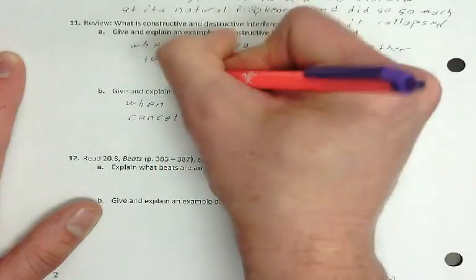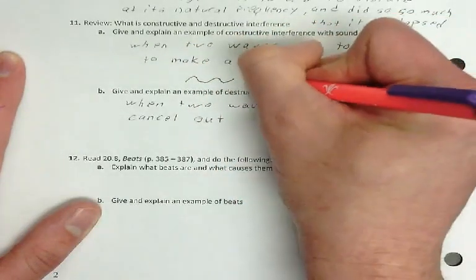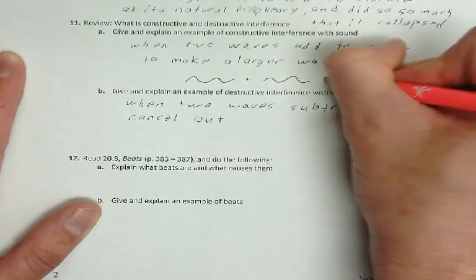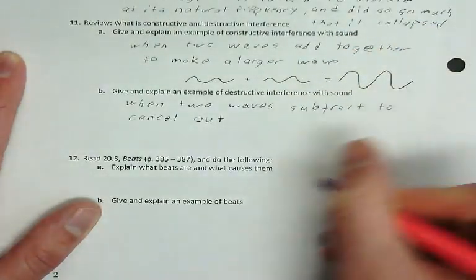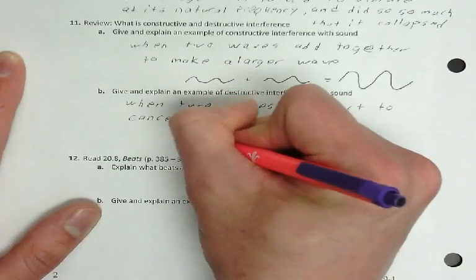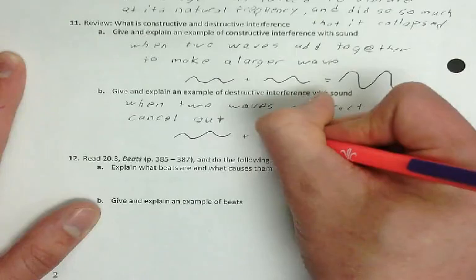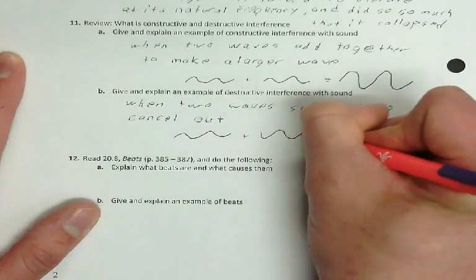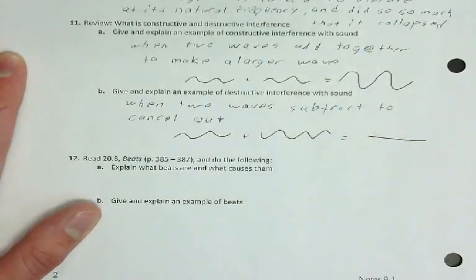So constructive interference is when you have this wave plus that same wave and it makes super wave, and destructive interference is when you have one wave plus the opposite wave and they cancel out with each other.